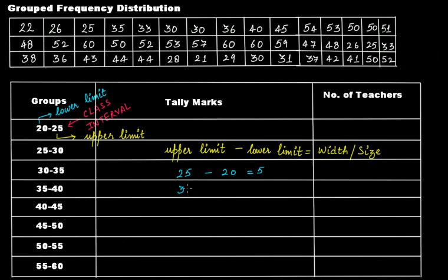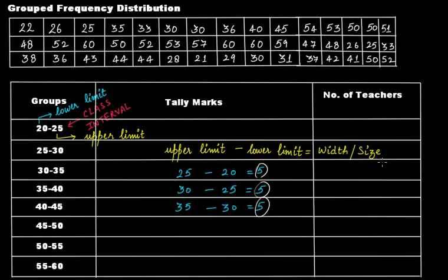30 minus 25 gives 5, and 35 minus 30 gives 5. So in this example each class interval has a width of 5. If you are wondering why we have this concept of width and size, the first step to make a histogram is to form a grouped frequency distribution — that is the first step. We will learn more about histograms in our next video tutorial, and there we will use this concept of width and size.